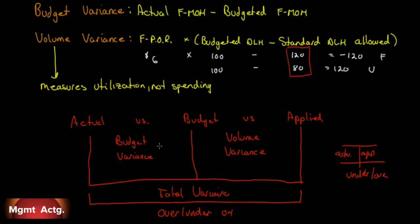Pay attention to this: the budget variance measures spending control. The total variance measures over or under applied overhead. The volume variance is only helpful in determining utilization of our facilities — not in determining our costs.